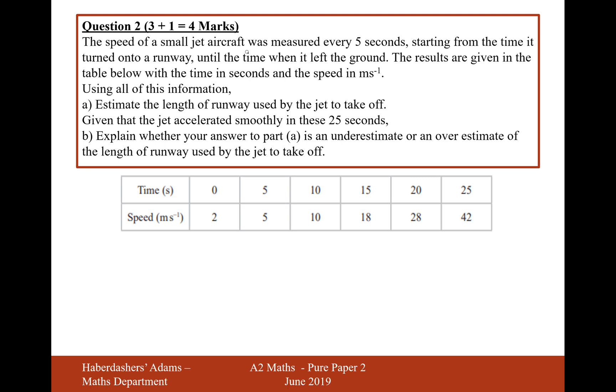The speed of a small jet aircraft was measured every 5 seconds starting from the time it turned onto the runway until the time it left the ground. The results are given in the table below with the time in seconds and the speed in meters per second. Using all of this information, estimate the length of the runway used by the jet to take off.